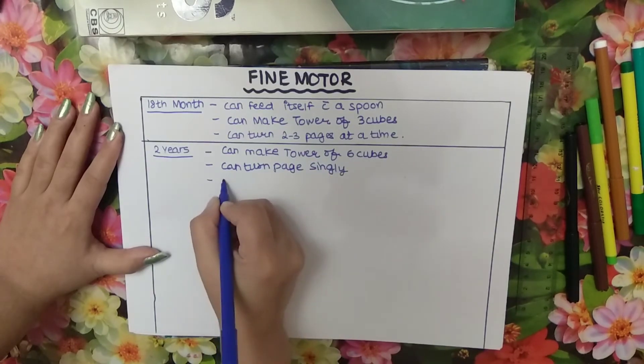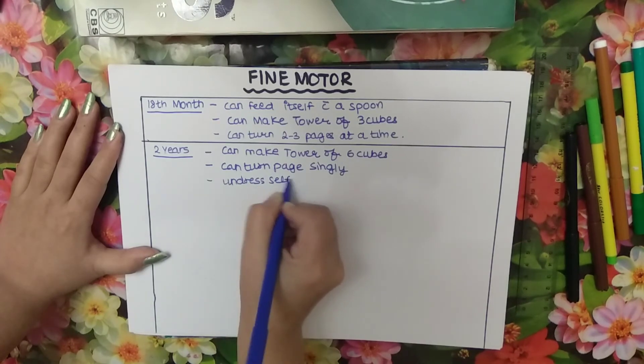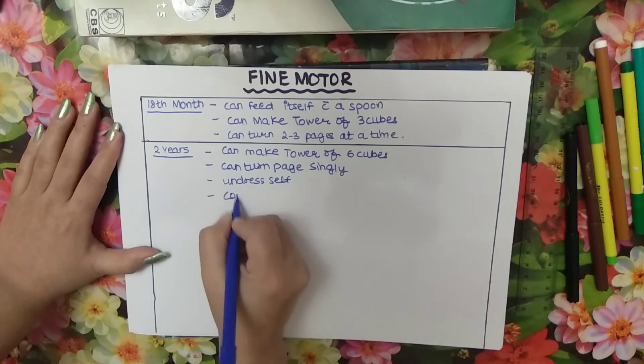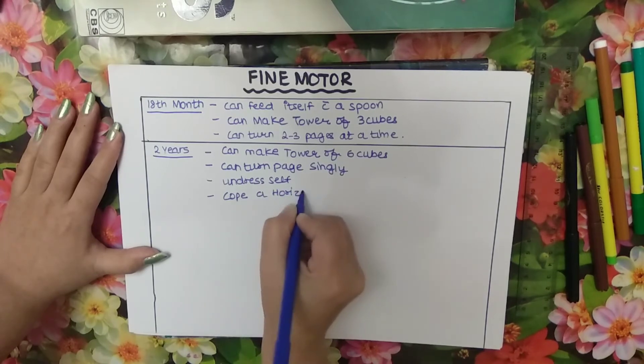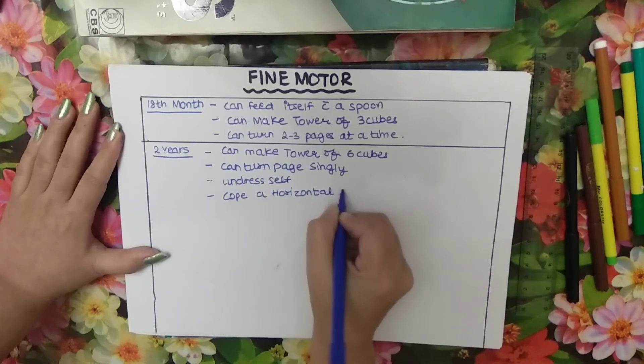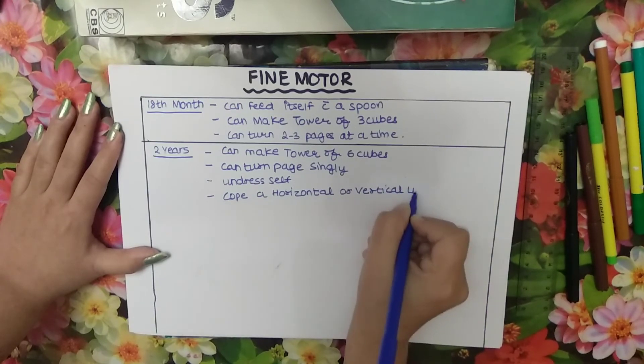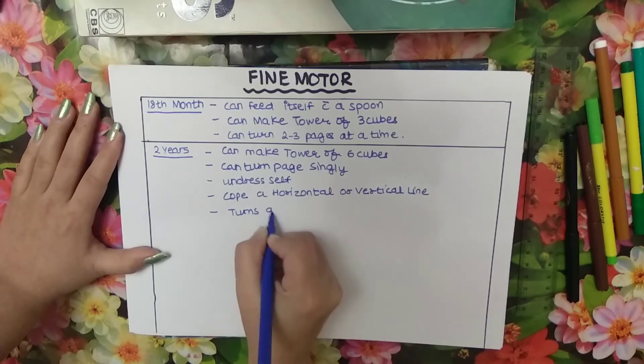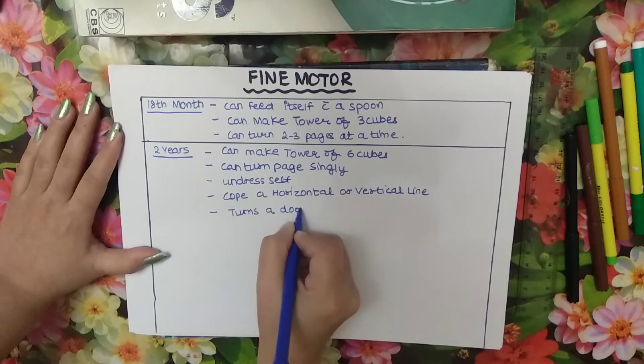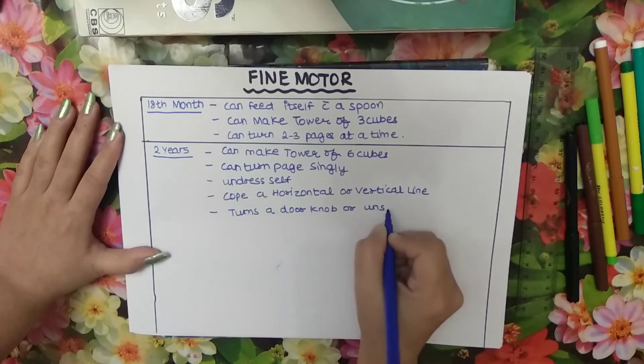Baby can undress itself. Baby can copy a horizontal or vertical line. Two year baby can turn a door knob or unscrew a lid.